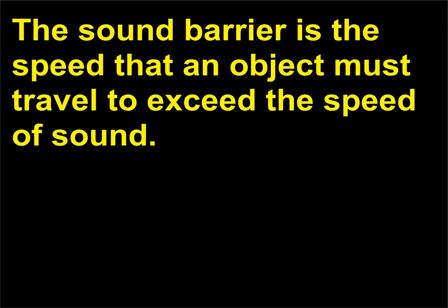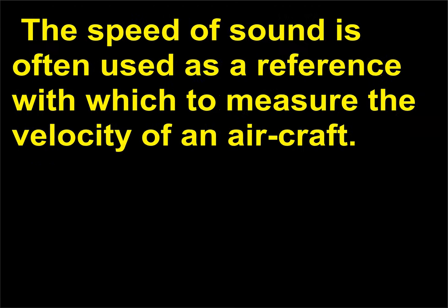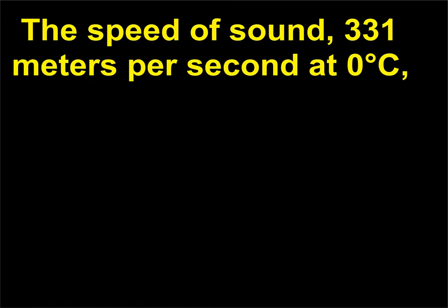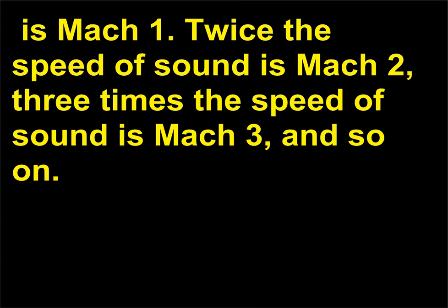What is the sound barrier? The sound barrier is the speed that an object must travel to exceed the speed of sound. The speed of sound is often used as a reference with which to measure the velocity of an aircraft. The speed of sound, 331 meters per second at 0 degrees Celsius, is Mach 1. Twice the speed of sound is Mach 2, three times the speed of sound is Mach 3, and so on.